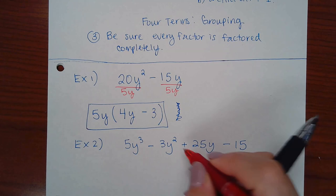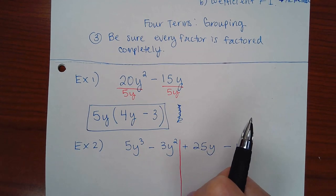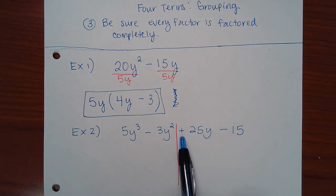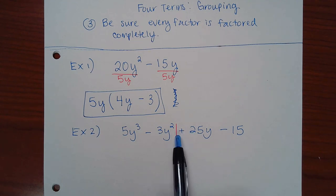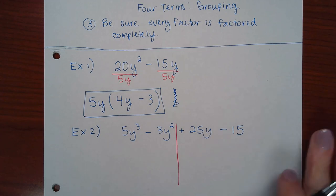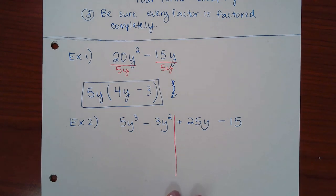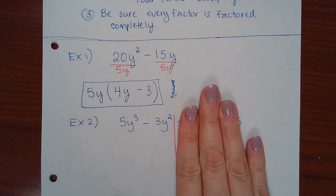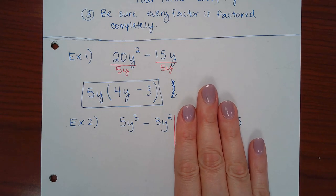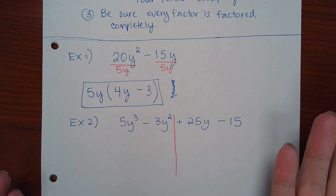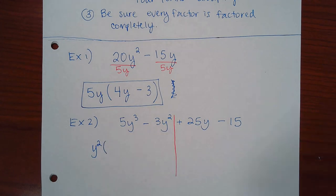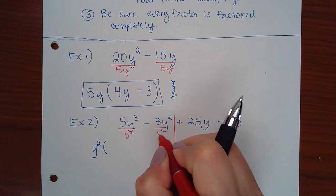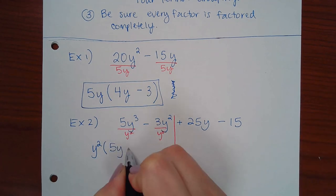In the grouping technique, split the polynomial in half: the first half is 5y³ − 3y², and the second half is 25y − 15. Look at each half as its own problem. For 5y³ − 3y², both terms share y², so factoring that out gives y²(5y − 3).